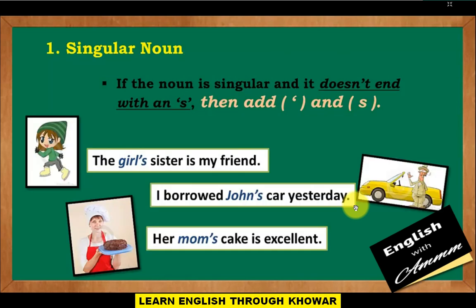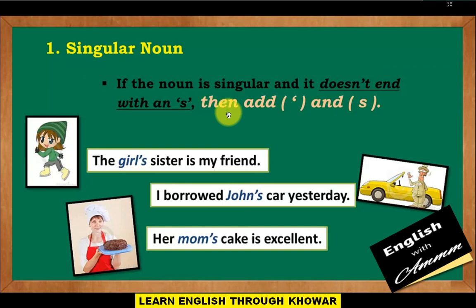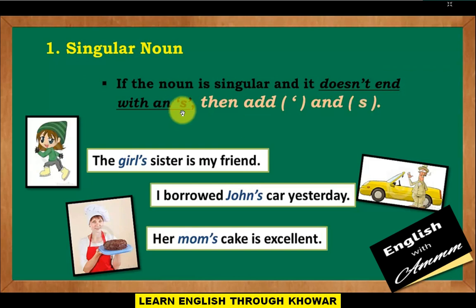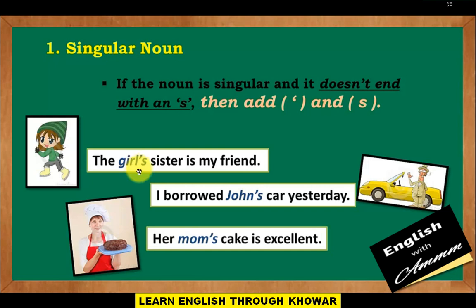If the noun is singular and it doesn't end with an S, then add apostrophe and S. Examples: 'The girl's sister is my friend,' 'I borrowed John's car yesterday,' 'Her mom's cake book is excellent.'